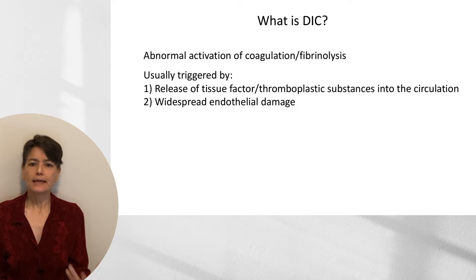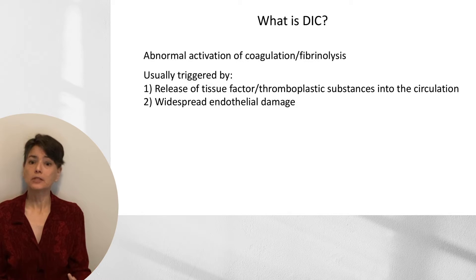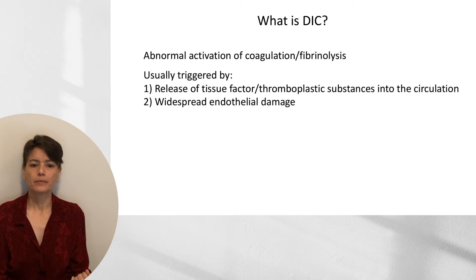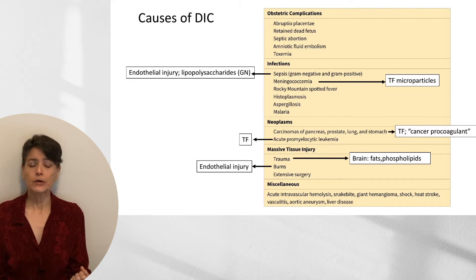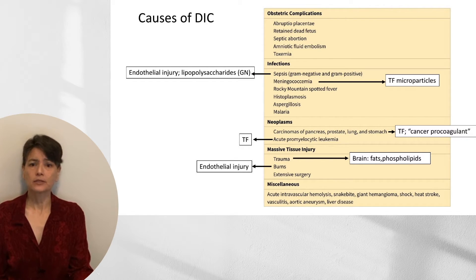DIC is the abnormal activation of coagulation and fibrinolysis, usually triggered by the release of tissue factor or some other thromboplastic substances into the circulation, or by widespread endothelial damage. There are a variety of causes of DIC, some of which are shown here in this table from Robinson-Kumar Basic Pathology. I'm going to focus on infections, neoplasms, and trauma.